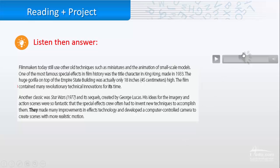Third one. Filmmakers today still use other old techniques, such as miniatures and the animation of small-scale models. One of the most famous special effects in film history was the title character in King Kong, made in 1933. The huge gorilla on top of the Empire State Building was actually only 18 inches, 45 centimeters high. The film contained many revolutionary technical innovations for its time.